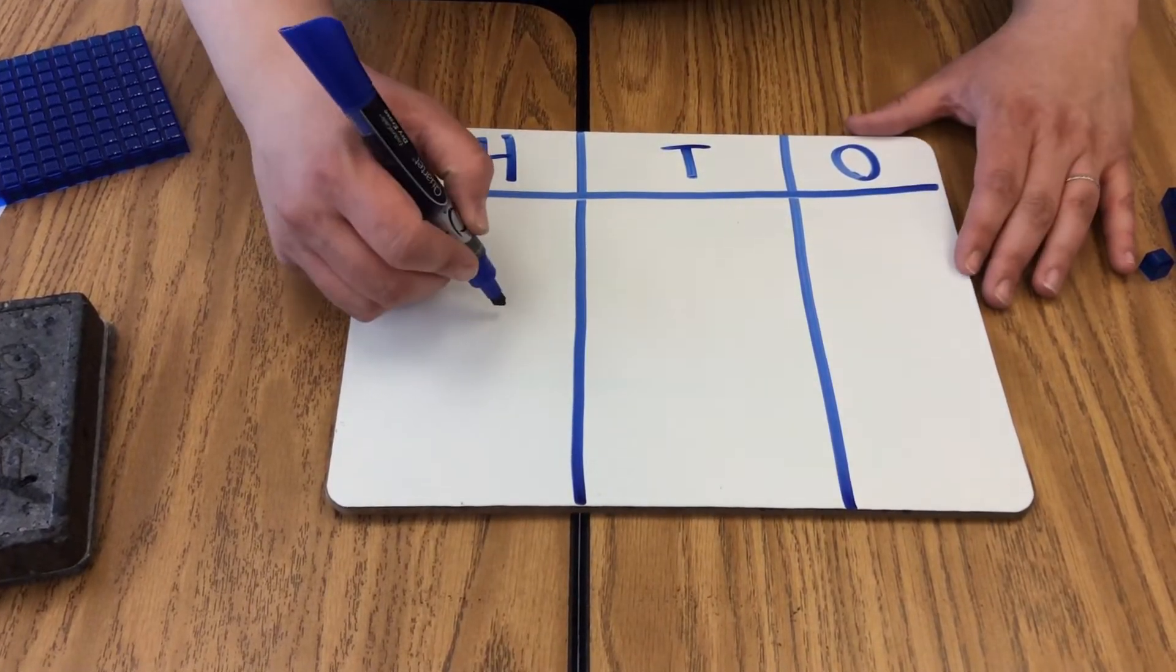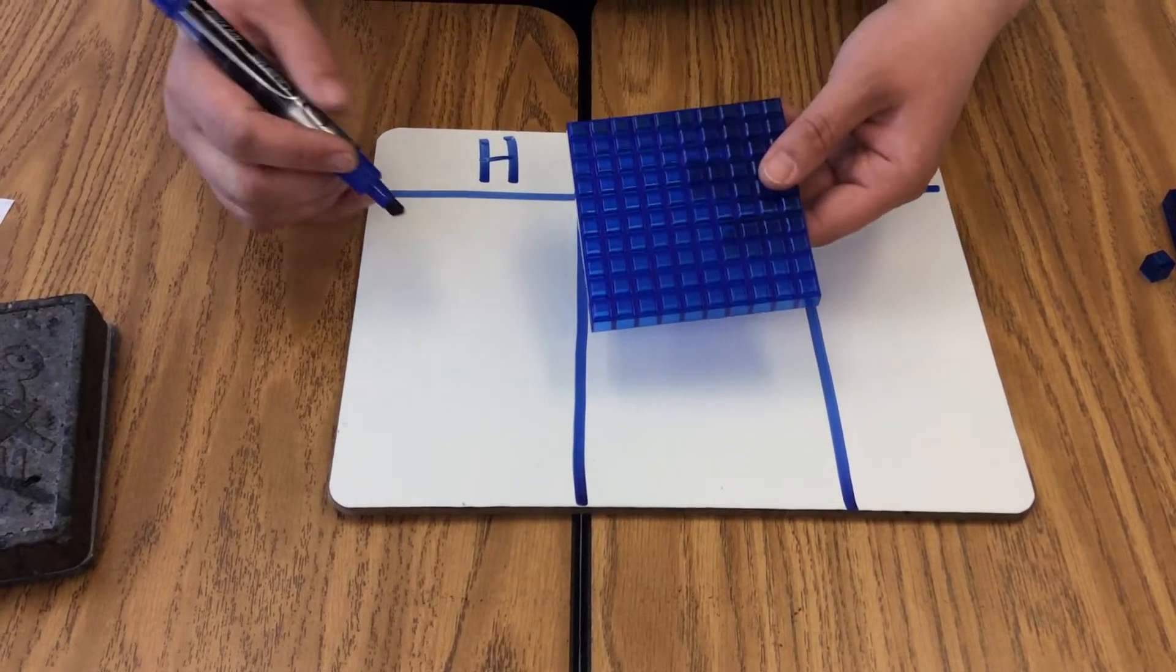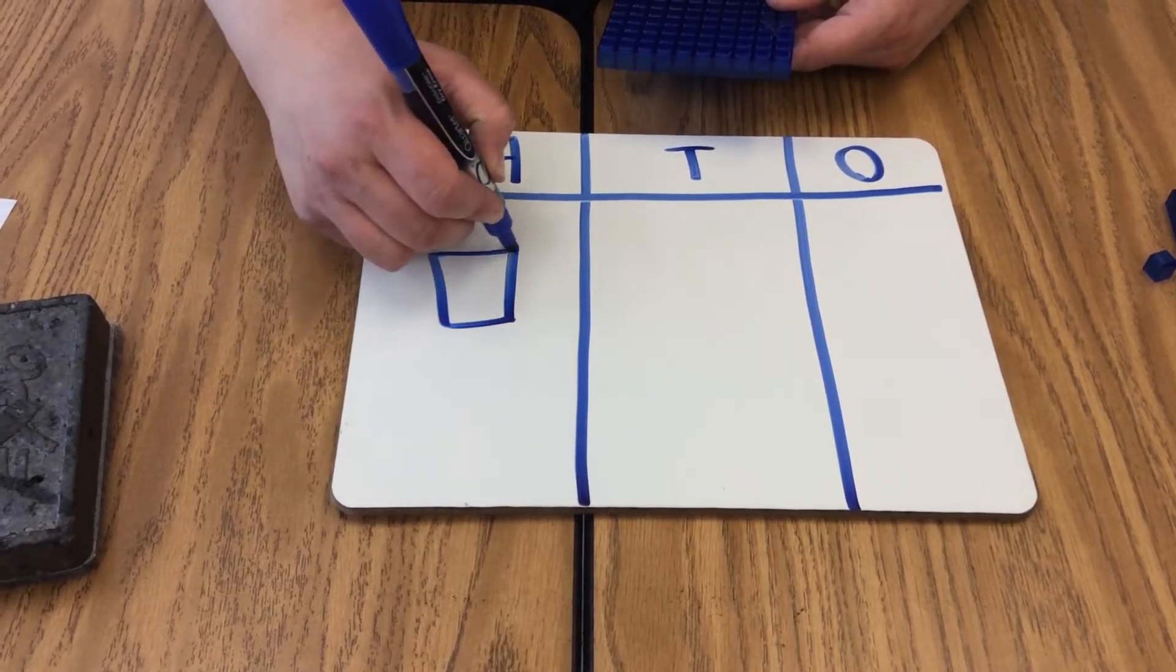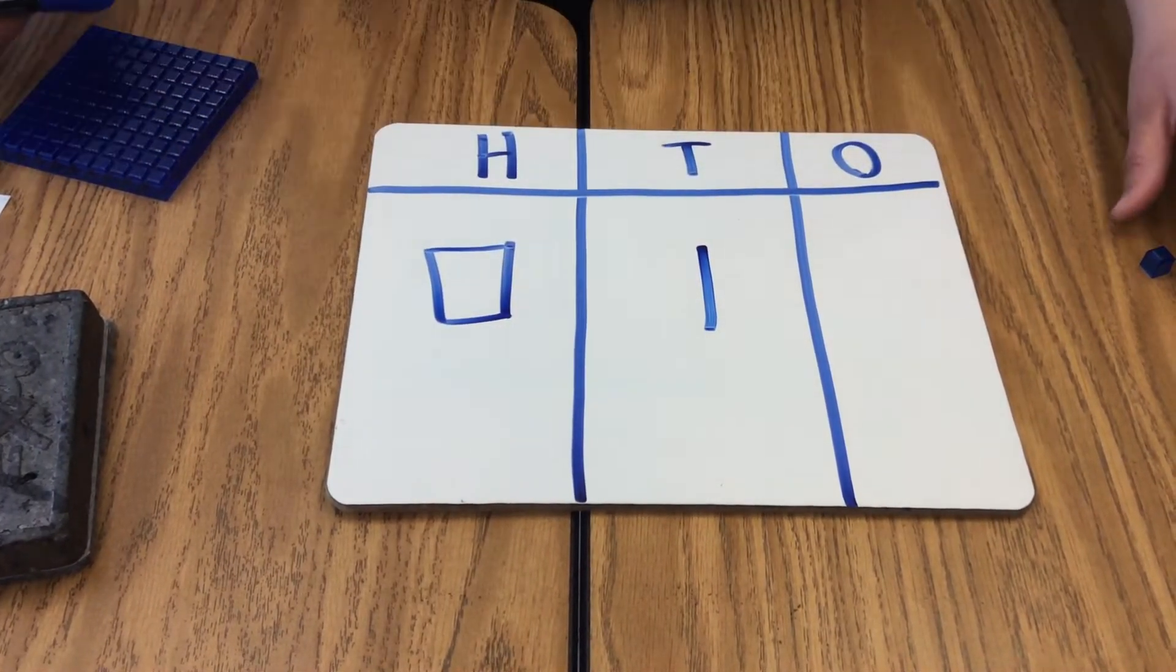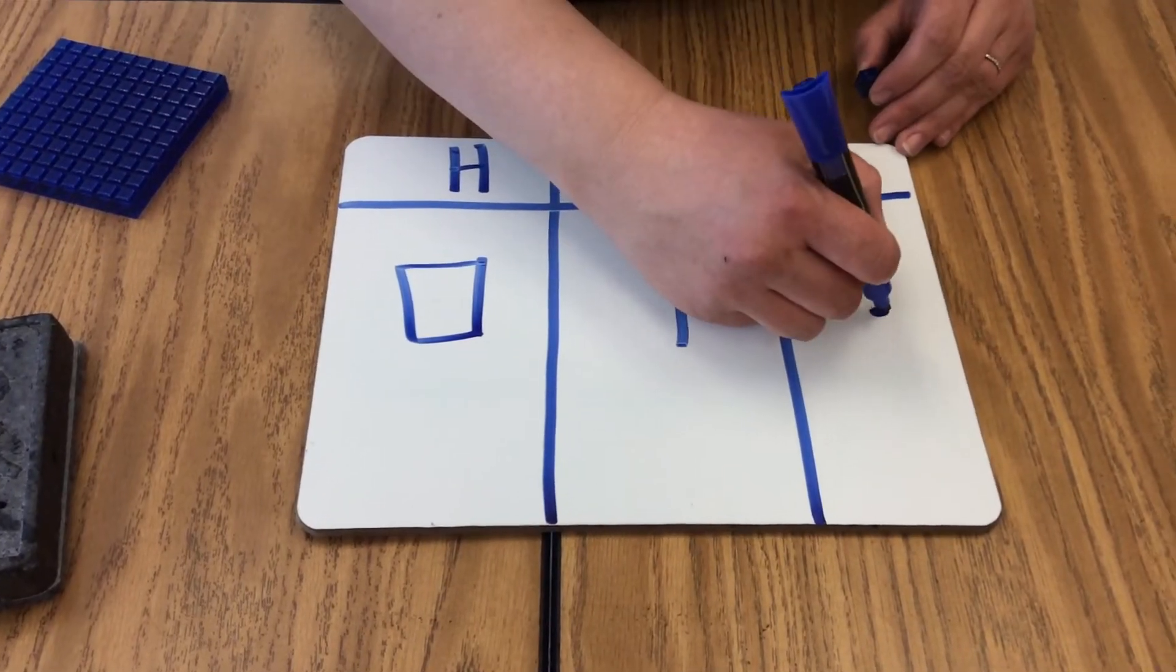When we're modeling our numbers, we show a flat by using a square, we show a rod by using a line, and we show a unit by using a small circle.